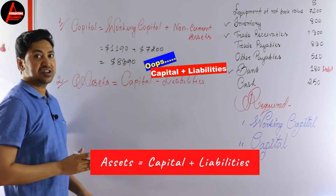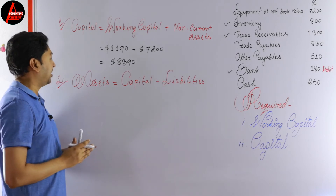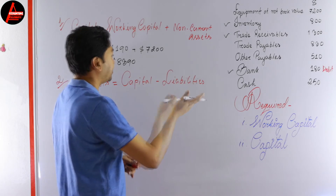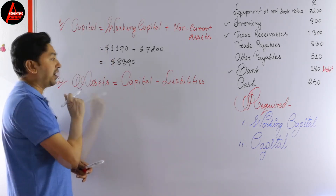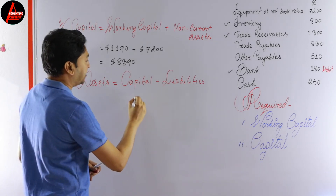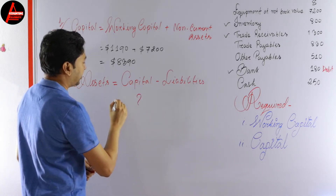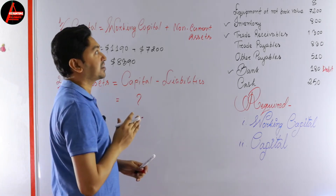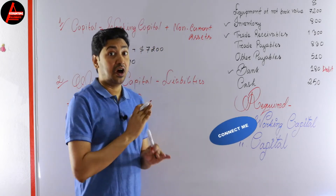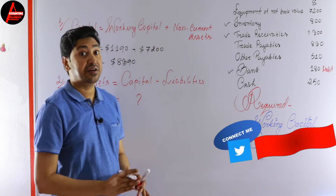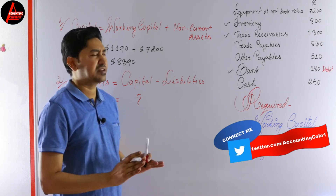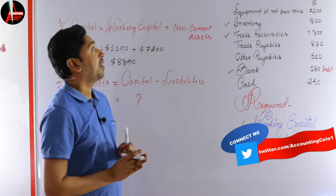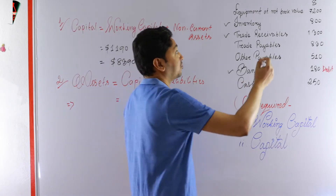For the second way we use the accounting equation: Assets = Capital + Liabilities. If we calculate total assets and total liabilities, we can figure out capital. Here capital is the unknown. Assets means all assets — current assets, non-current assets, tangible, intangible — whatever asset you have, take all of them.